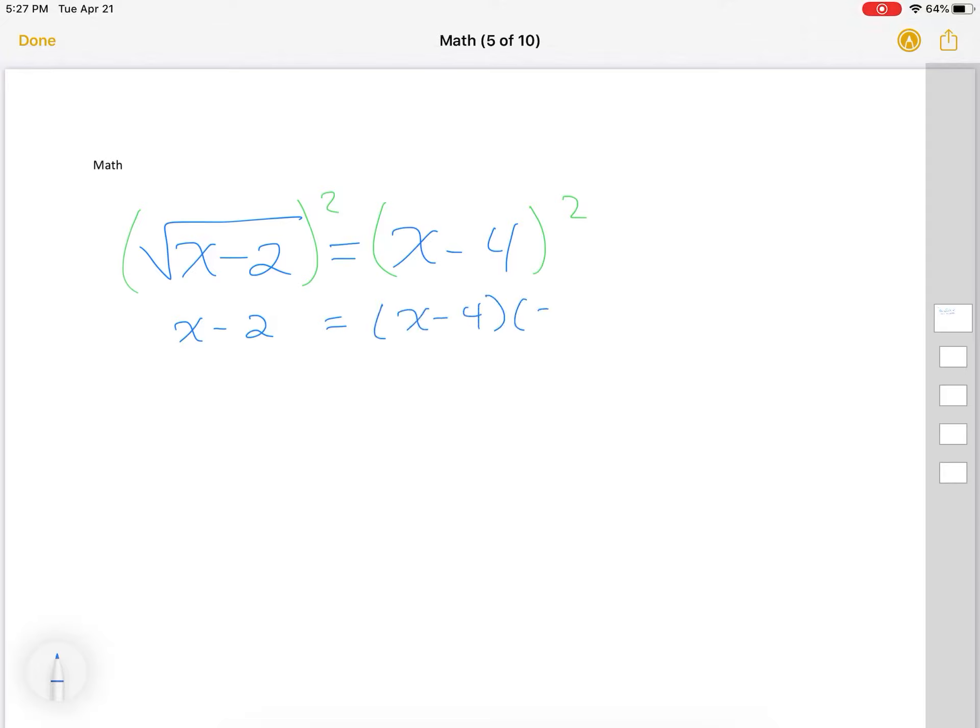And on this side, it's like having x minus 4 times x minus 4. So you have to FOIL. Now when I FOIL, I get x squared minus 4x minus 4x plus 16.